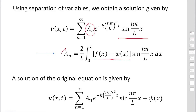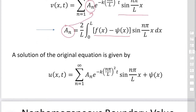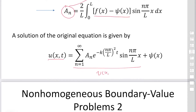Using A sub n, we substitute back into the equation to find the solution for V. Once V is found, we obtain u as the sum of V(x,t) and Pc(x), where Pc is the solution of the first problem. This is the first method to solve non-homogeneous boundary value problems.